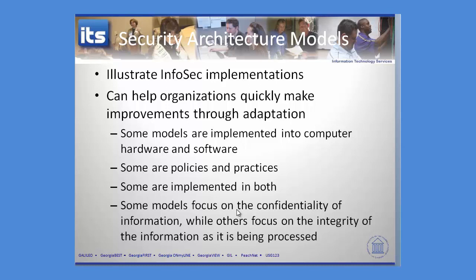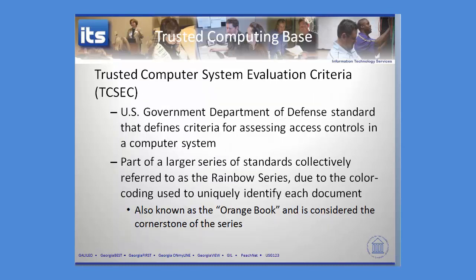Let's look at the rainbow series, as it's affectionately known, or the trusted computer system evaluation criteria. This came out — at least the first time I saw it was in the early 80s. Each of the books in the series has a different color, and the orange book was considered the cornerstone of it, and thus it was called the rainbow series. Not too many people called it the trusted computer system evaluation criteria — it just doesn't roll off the tongue. TCSEC.